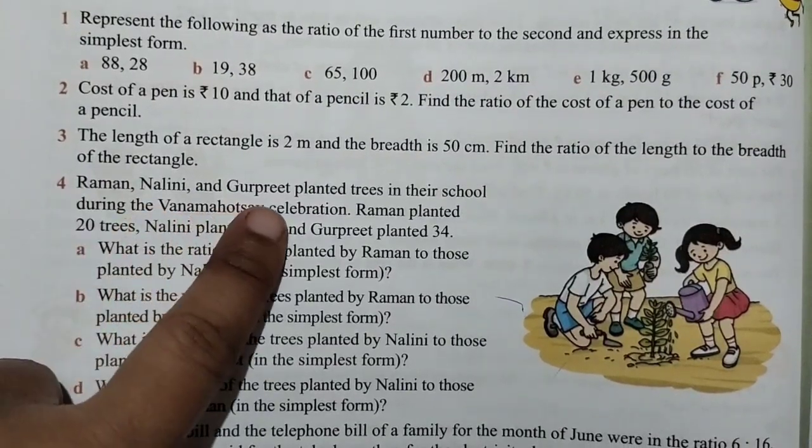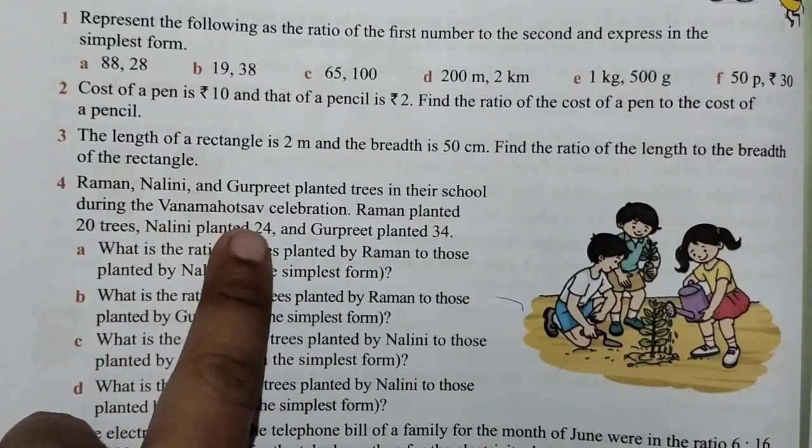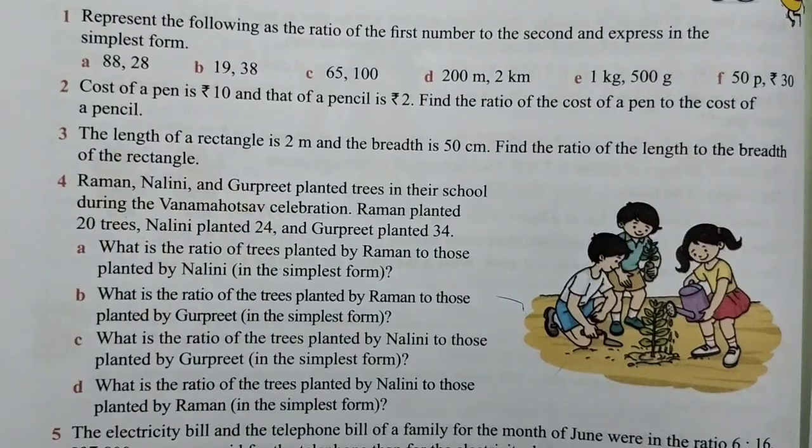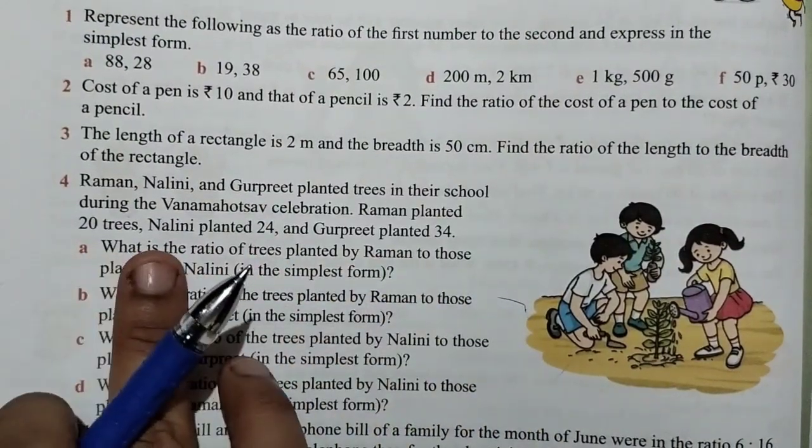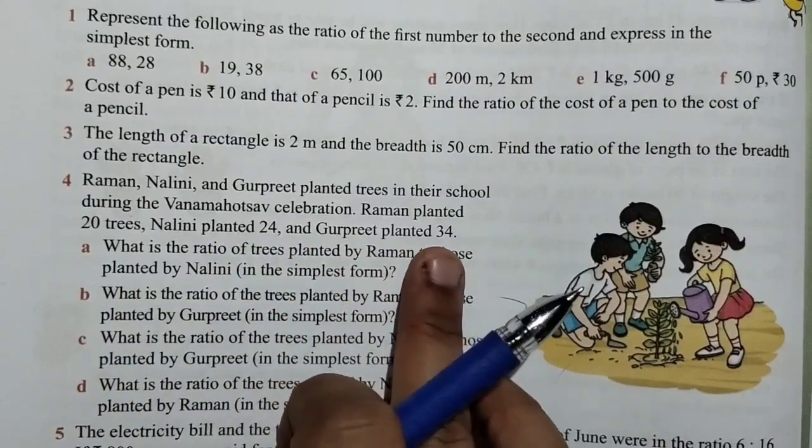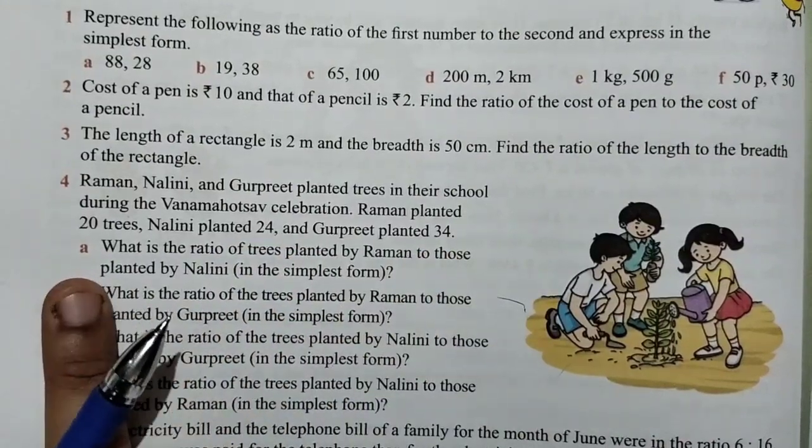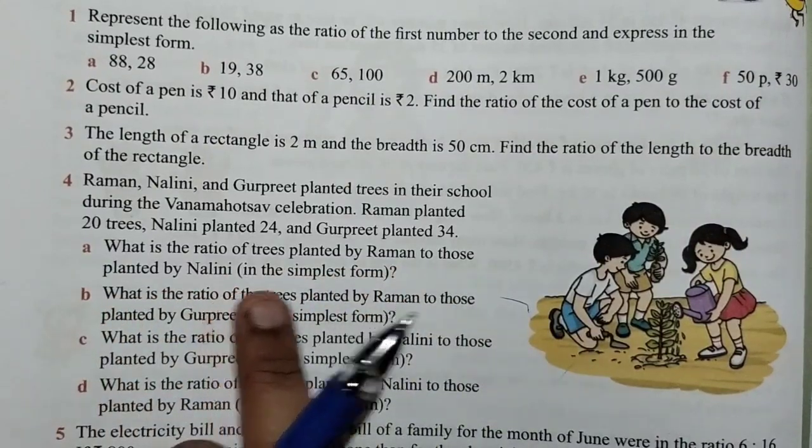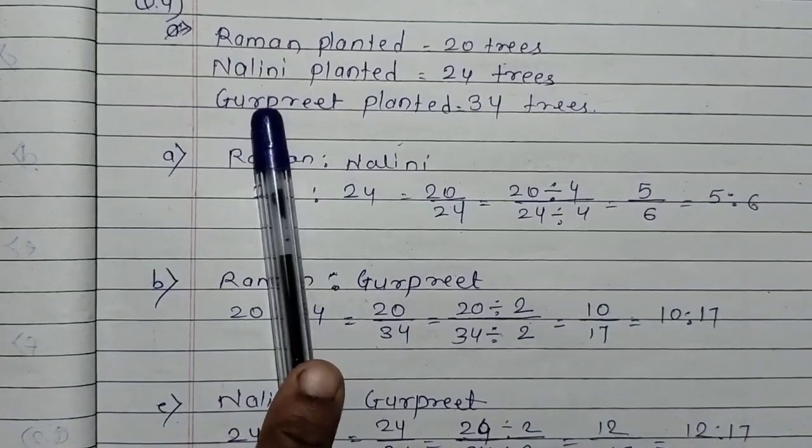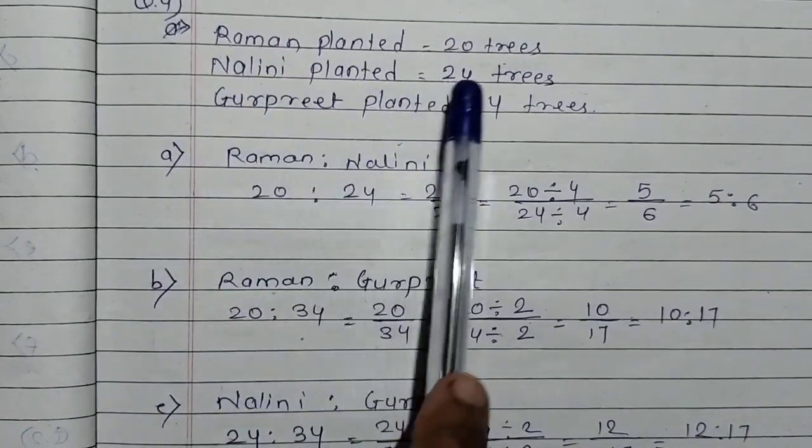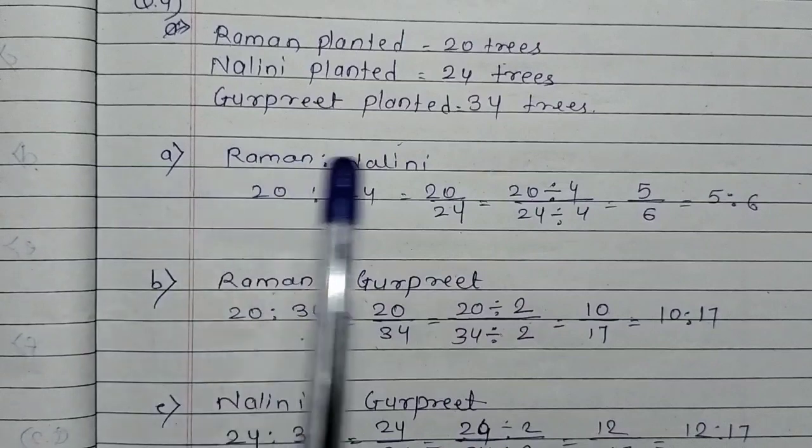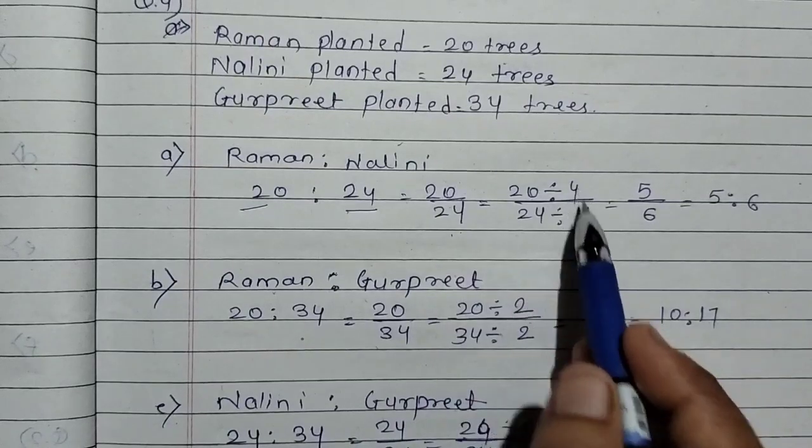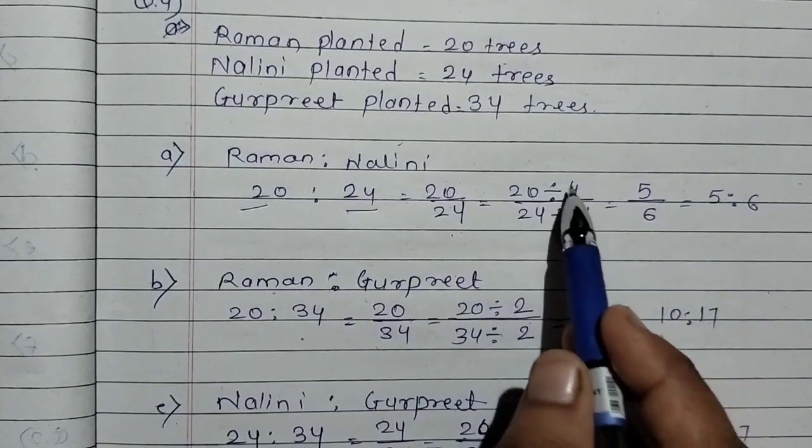Next question number 4: Raman, Nalini and Gurpreet planted trees in their school during the Van Mahotsav celebration. Raman planted 20 trees, Nalini planted 24 and Gurpreet planted 34. What is the ratio of trees planted by Raman to those planted by Nalini in simplest form? So first of all, I have given how many Raman, Nalini and Gurpreet planted. Raman to Nalini: Raman 20, Nalini 24. This means 20 upon 24. These two numbers are divisible by 4.